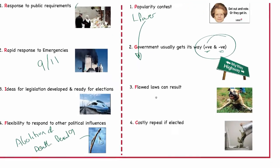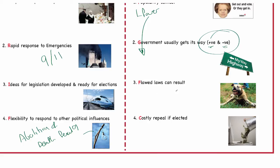Another disadvantage is that frequently flawed laws can result. Remember, we spoke about the Dangerous Dogs Act 1991 — this was rushed through and really poorly put together. Nobody actually thought carefully about what sort of dogs or what would happen to those dogs. Allowing political parties to push through legislation, particularly if done as a knee-jerk reaction and to court popularity, can frequently result in flawed law.